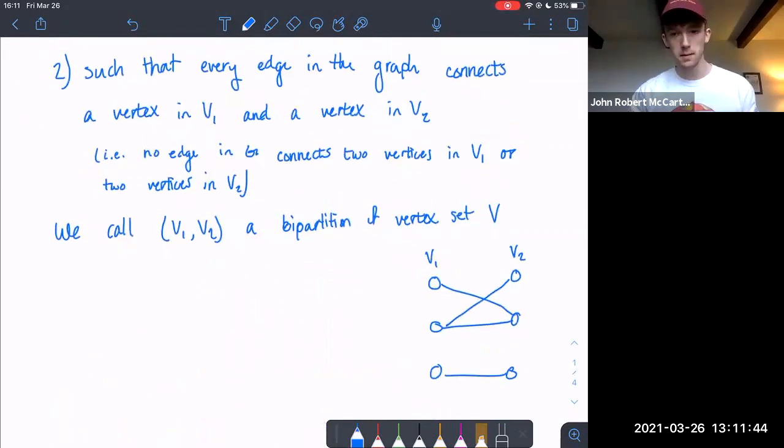So here in the bottom right corner, I've just drawn a very simple example of what a bipartite graph might look like. As you can see, we have two sets of vertices V1 on the left and V2 on the right. And if we look at any two vertices in V1, there are no edges between them. And for any two vertices in V2, there are no edges between them as well, only edges across the two sets.